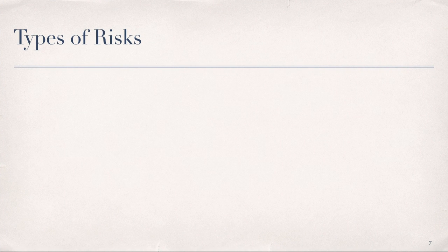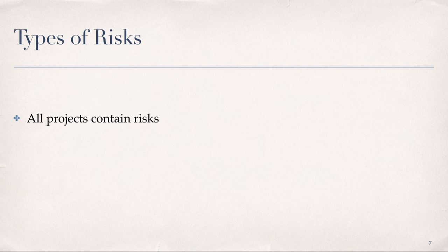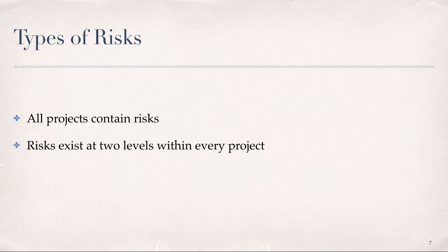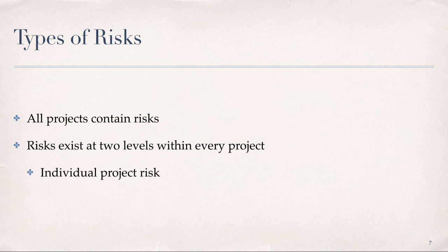Before we turn our attention to PMI standards for project risk management, let's consider the types of risks. First of all, all projects contain risks. Projects, by definition, are unique undertakings with varying degrees of complexity to deliver on user requirements. Risks must be managed in the context of project constraints and assumptions while responding to stakeholder expectations, which may often be conflicting and changing over the life of the project. Risk can exist at two levels within every project, each addressed within the PMBOK knowledge area for project risk management. Individual project risk is an uncertain event or condition that, if it occurs, has either a positive or negative effect on one or more project objectives.